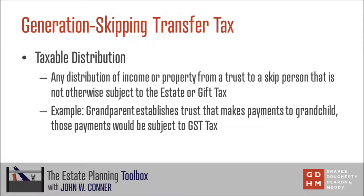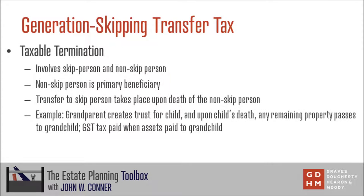An example of a taxable distribution would be a grandparent who sets up a trust for a grandchild — any payments made out of the trust to that grandchild beneficiary would be subject to the GST tax. The other form of indirect skip is a taxable termination. This involves a skip person and a non-skip person, usually in a trust scenario where a non-skip person is the initial primary beneficiary of the trust, such that the transfer to the skip person takes place upon the death of the non-skip person. An example would be a grandparent creating a trust for their child — once distributions are made to the skip person after the death of the non-skip person, the GST tax would apply to those distributions.